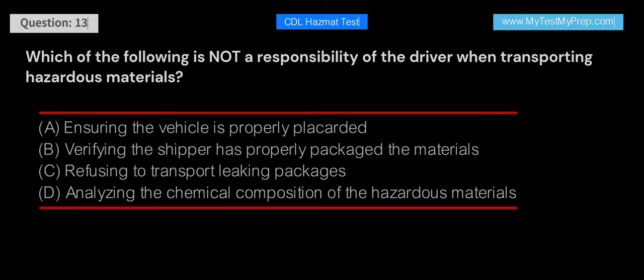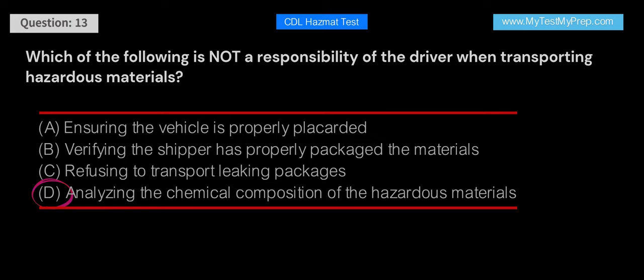Which of the following is not a responsibility of the driver when transporting hazardous materials? A. Ensuring the vehicle is properly placarded. B. Verifying the shipper has properly packaged the materials. C. Refusing to transport leaking packages. D. Analyzing the chemical composition of the hazardous materials. Answer: D. Analyzing the chemical composition of the hazardous materials is not a responsibility of the driver. The driver's responsibilities include ensuring proper placarding, verifying correct packaging by the shipper, and refusing to transport leaking packages.